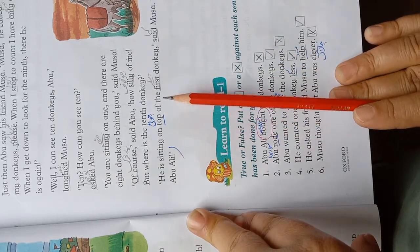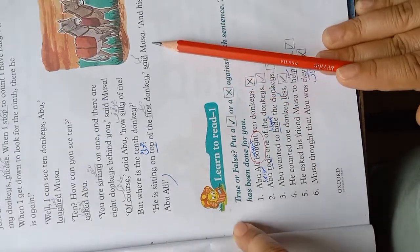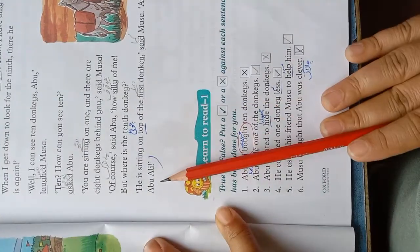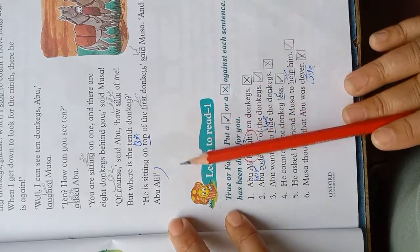He is sitting on top of the first donkey. Woh pehle gadde ki choti par baitha hai. Said Musa. And his name is Abu Ali. Aur uska naam Abu Ali hai.